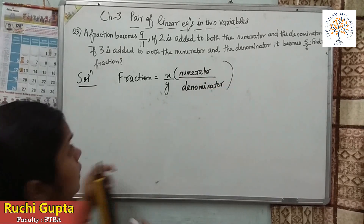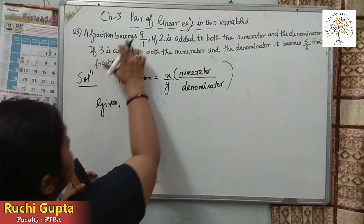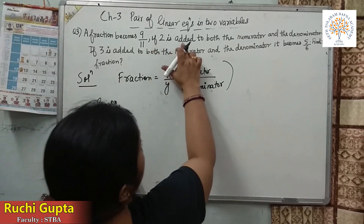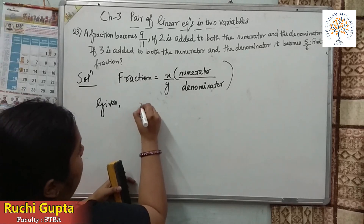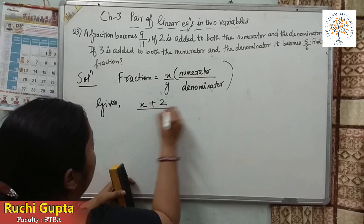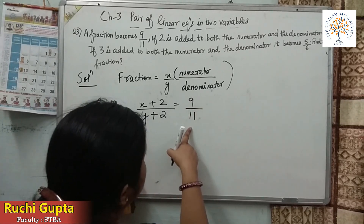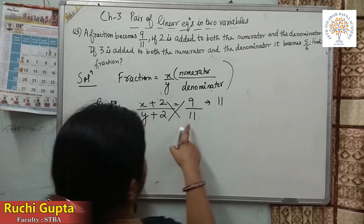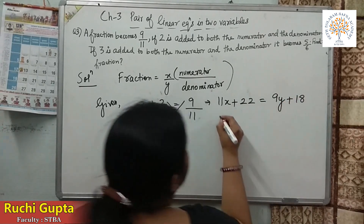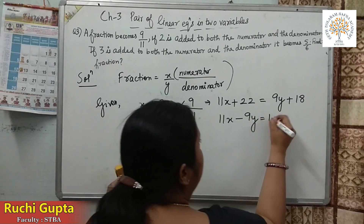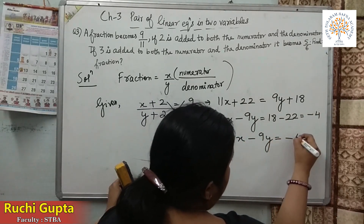We now make equations using the given conditions. First condition: the fraction becomes 9 upon 11 if 2 is added to both the numerator and the denominator. So the numerator becomes X plus 2 and the denominator becomes Y plus 2, giving (X+2)/(Y+2) equals 9/11. Cross-multiplying: 11(X+2) equals 9(Y+2), so 11X plus 22 equals 9Y plus 18. Rearranging: 11X minus 9Y equals minus 4. This is our first equation.